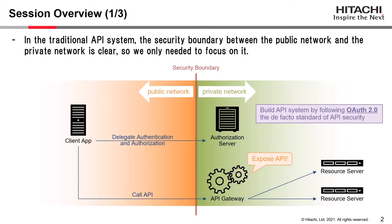This is today's session overview. In the traditional API system, the security boundary between the public network and the private network is clear, so we only needed to focus on the security boundary. Inside the system is the private network and outside is the public network. API systems are typically built following OAuth 2.0, the de facto standard of API security. A client application delegates authentication and authorization to the authorization server, gets an access token, and calls the API exposed by the API gateway.